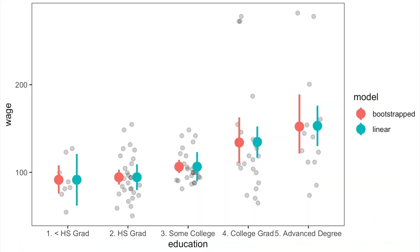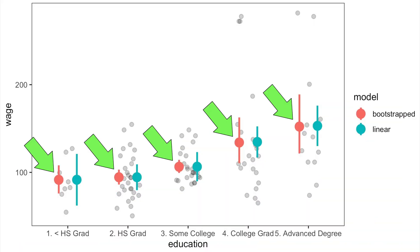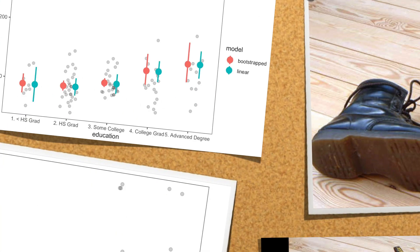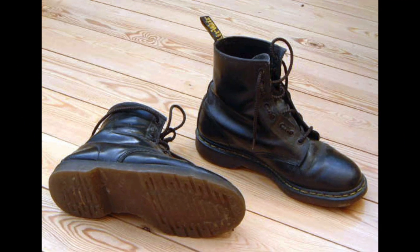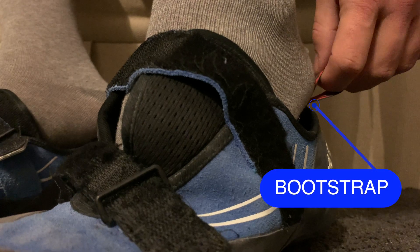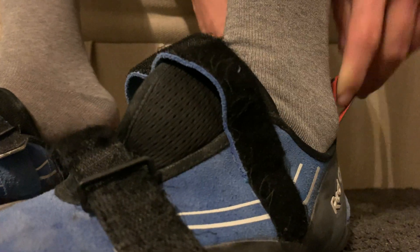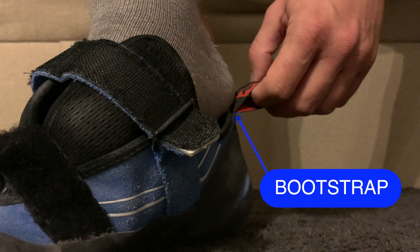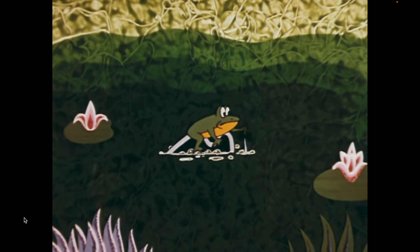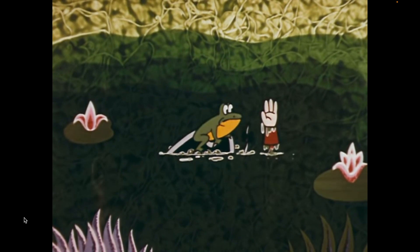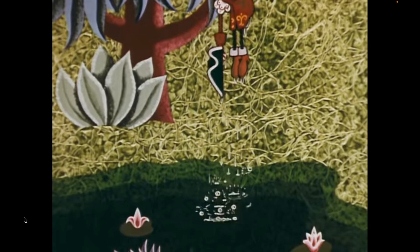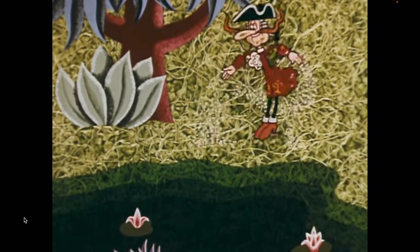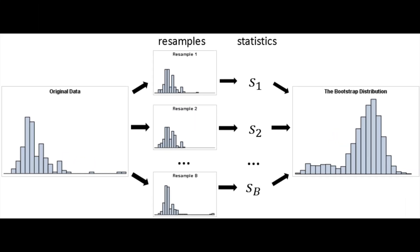In order to better understand how bootstrap models work, we need to understand what the bootstrap itself actually is. A bootstrap is a little loop on the back of a boot to help you pull it on, and the phrase 'pulling oneself up by one's bootstraps' means to succeed without any external help. For data, it simply means resampling.